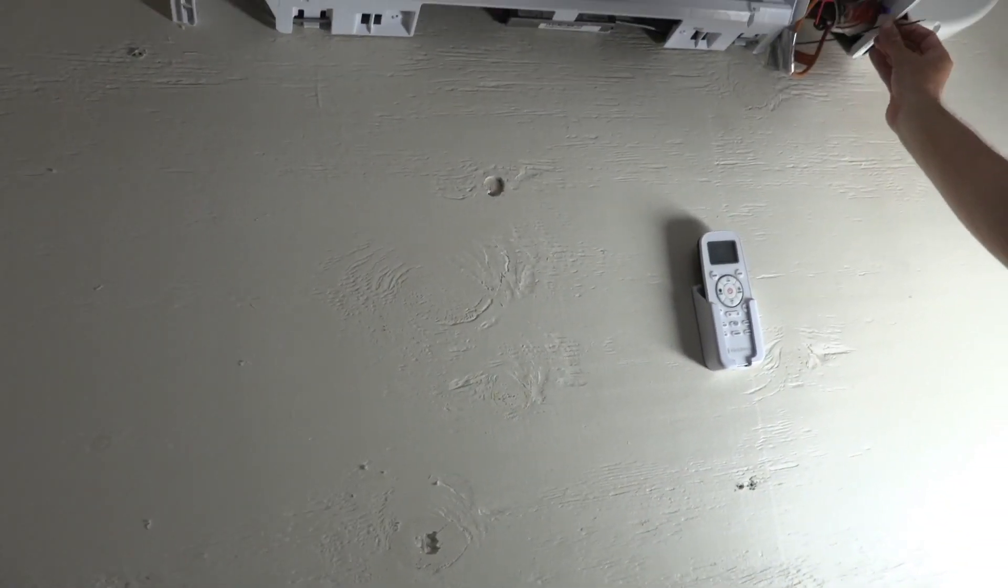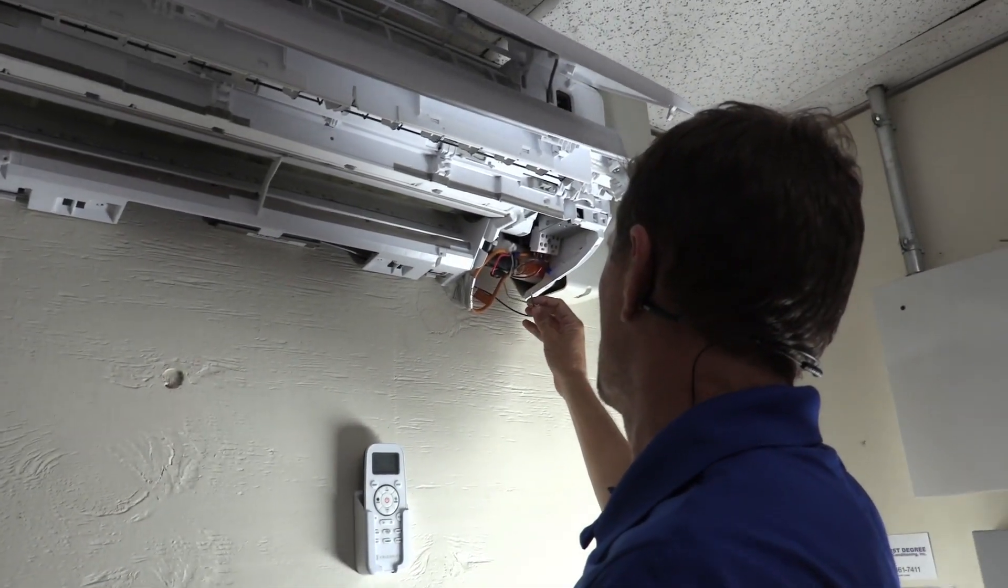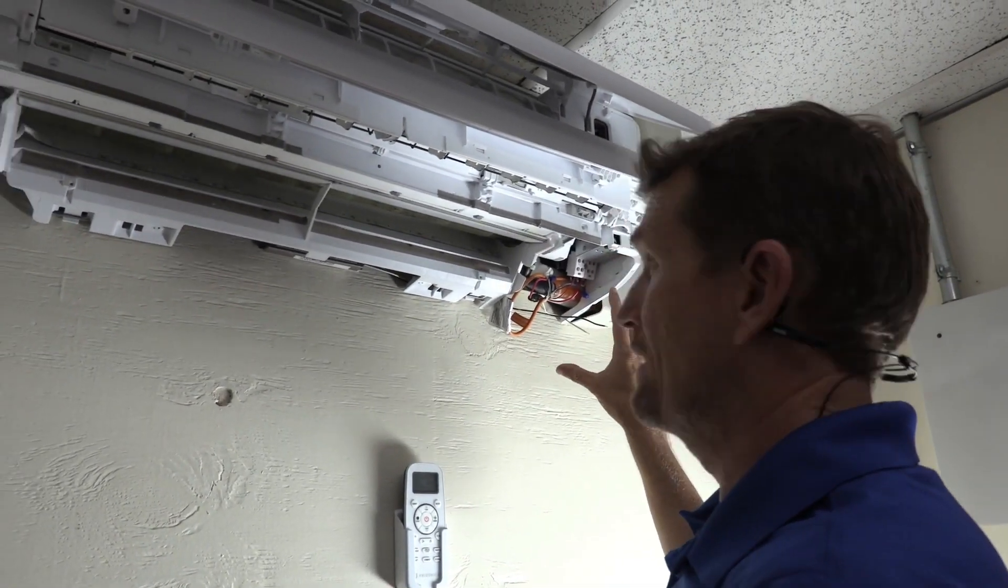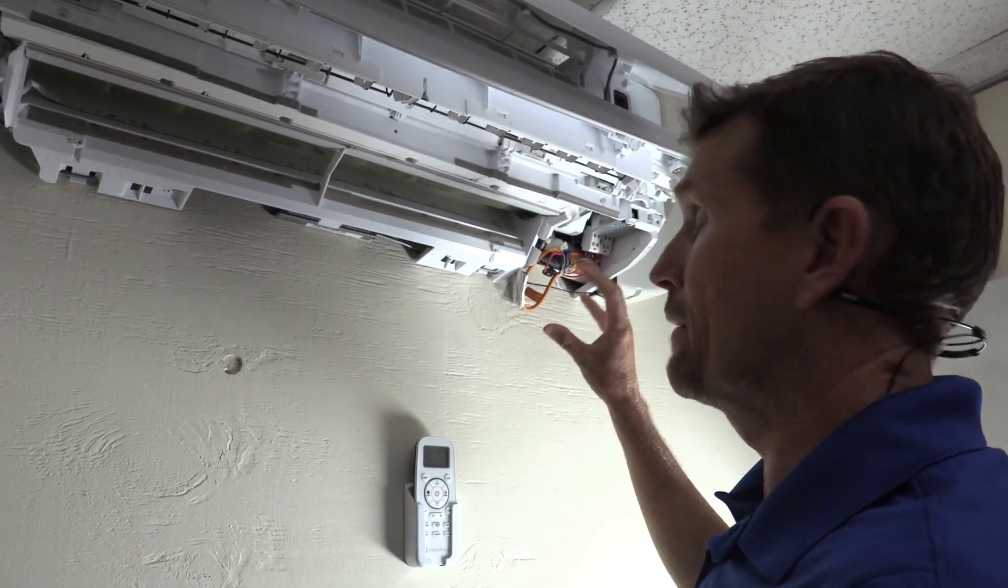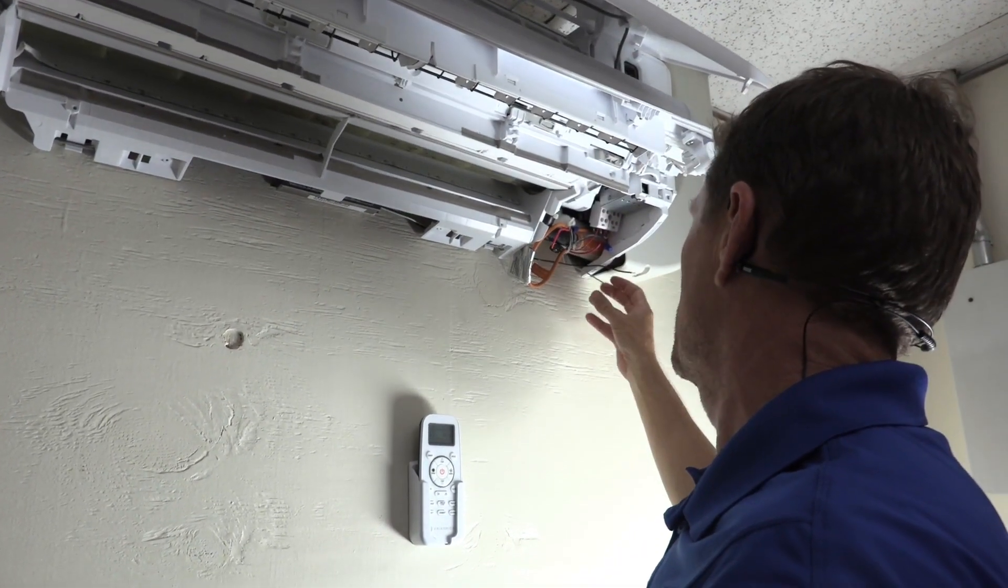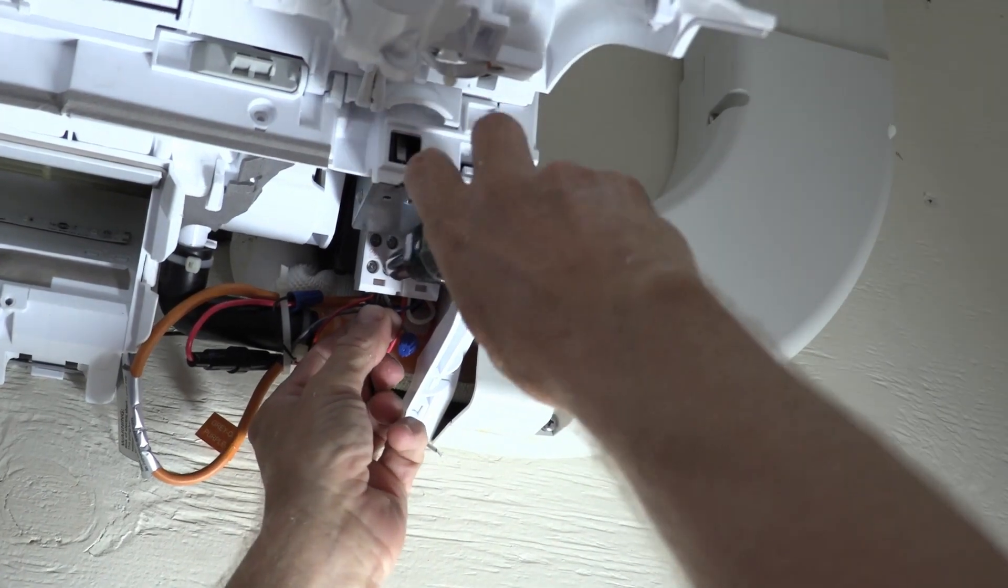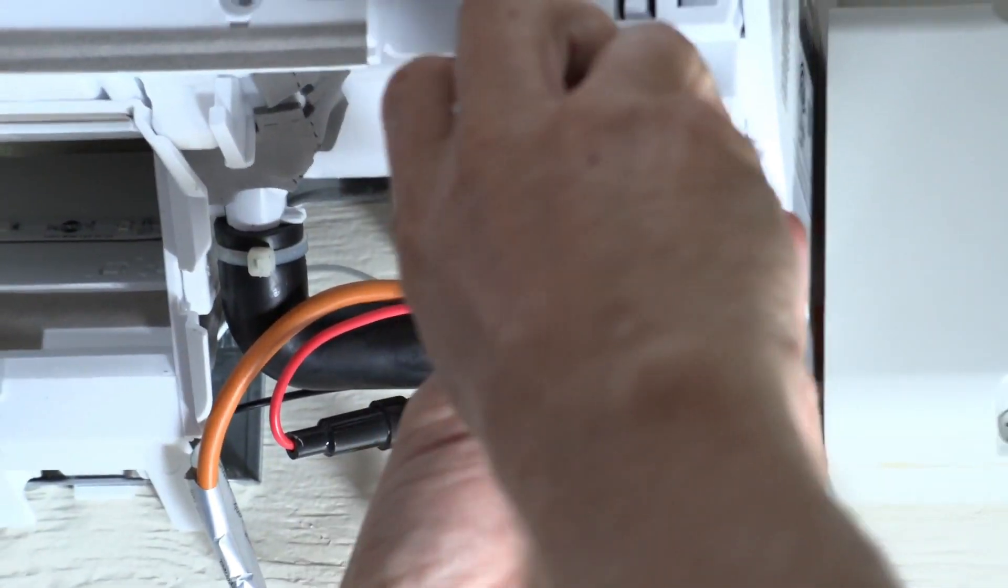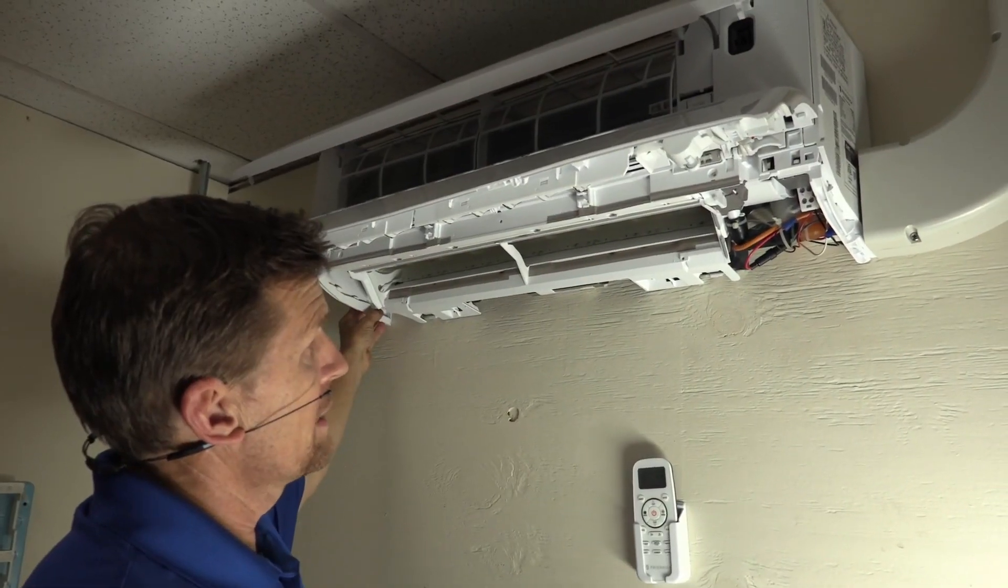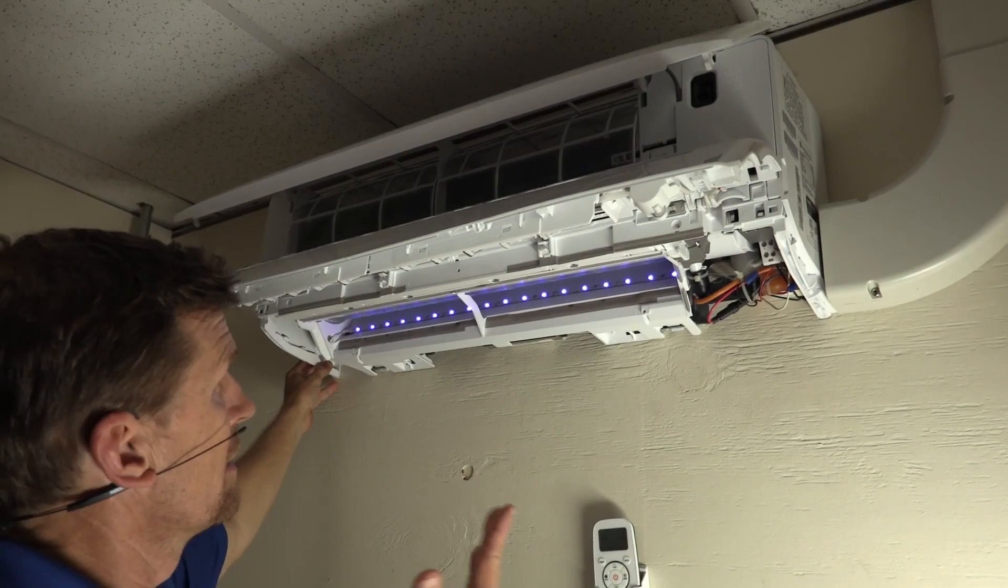Now what we're going to be doing is connecting this to L1 and L2. In this case, you do want to make sure the power is off when you make these connections by turning it off at the breaker or at the condensing unit. So we'll go ahead and turn that on. And there it is.